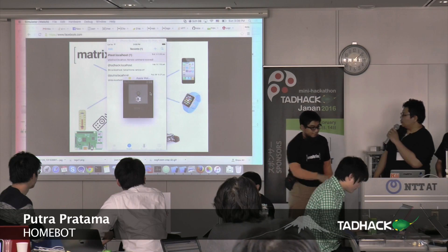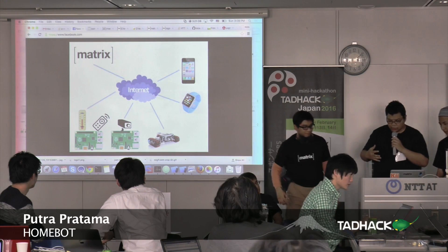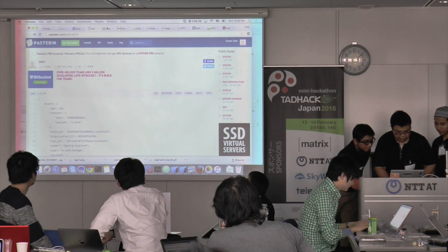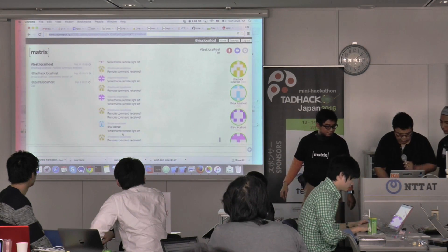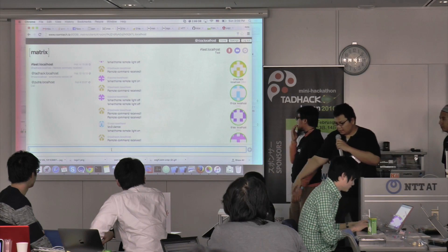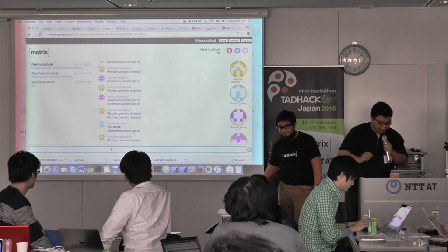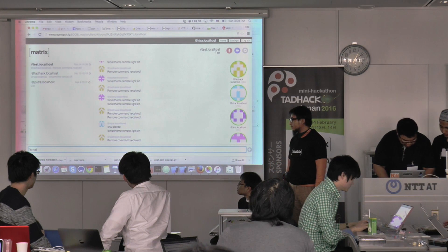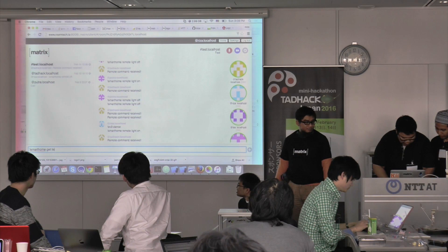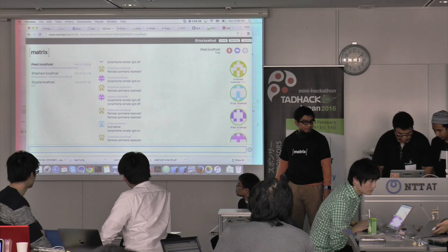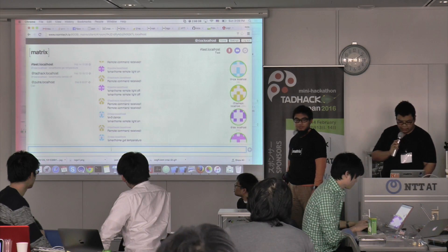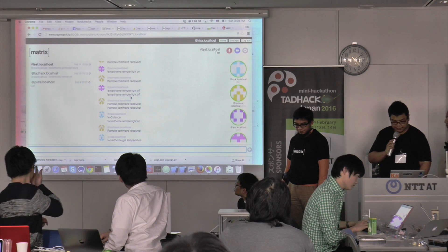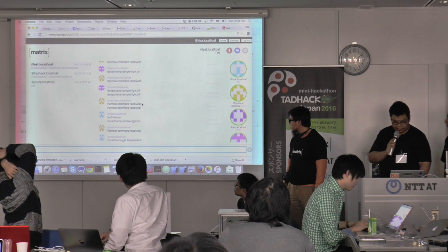We use the Matrix bot to parse all of the commands. For example, you have a unit with a temperature sensor and you want to know the temperature. You just type 'smart home get temperature'. If you execute that command, the bot will parse it and in a second it will give you the latest temperature information together with a graphic. The temperature is decreasing since the last five minutes, as you can see here.